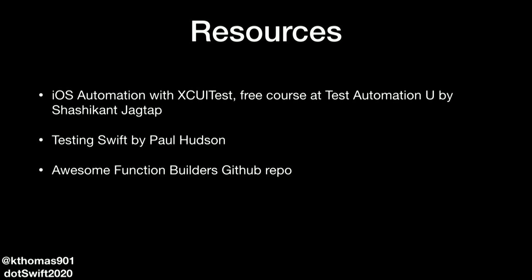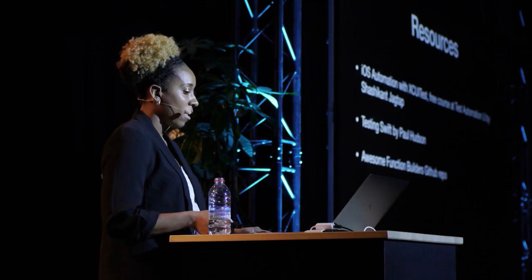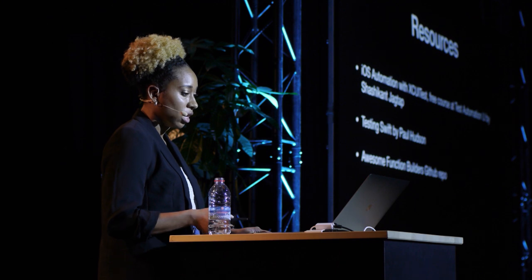For more resources, I highly recommend the iOS Automation with XCUITest course, which is free at Test Automation University written by Shasi, who inspired the whole enum example. Also Testing Swift by Paul Hudson, a great comprehensive book covering unit, UI, integration tests, automation, and CI. And if you're interested in function builders, the Awesome Function Builders GitHub repo has a long list of resources and cool function builders that the community has created.